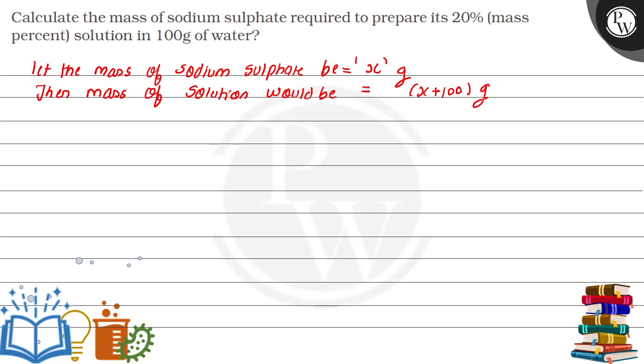Now we know that the formula of mass percentage is mass of solute, that is X grams, divided by mass of solution, that is X plus 100, multiplied by 100.